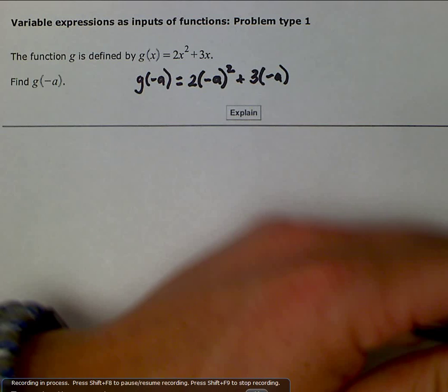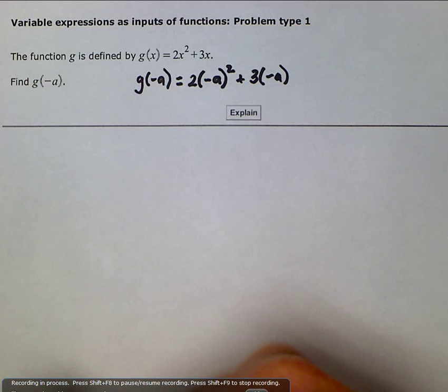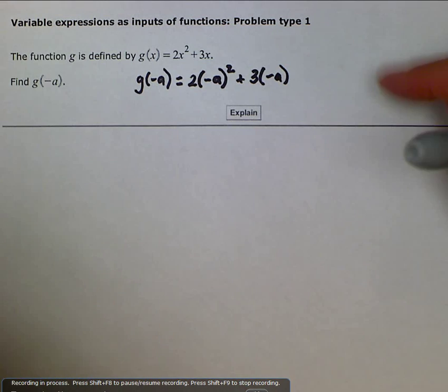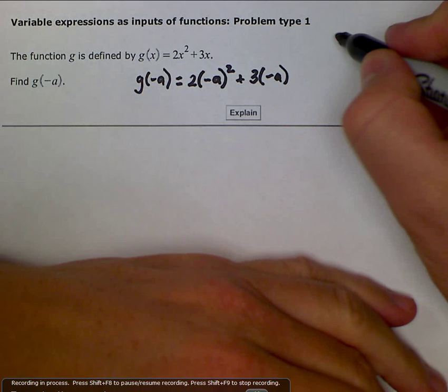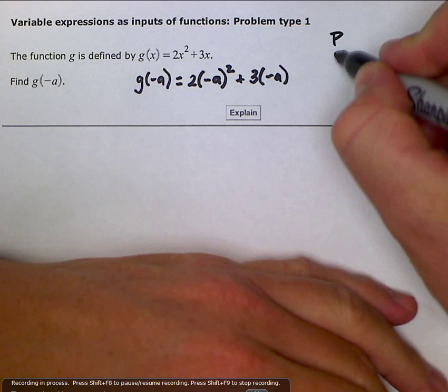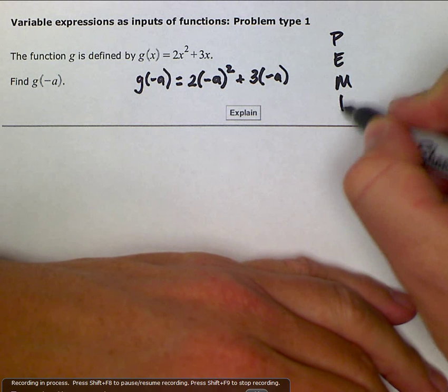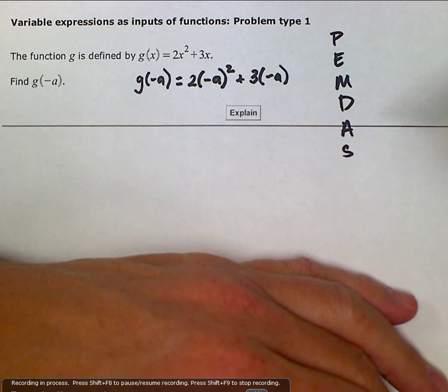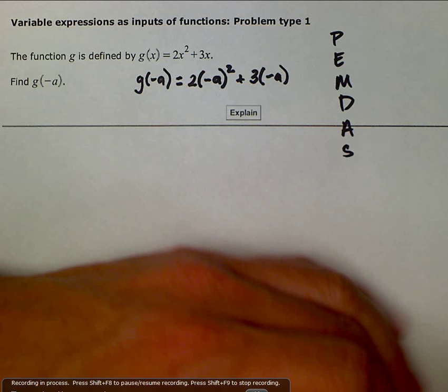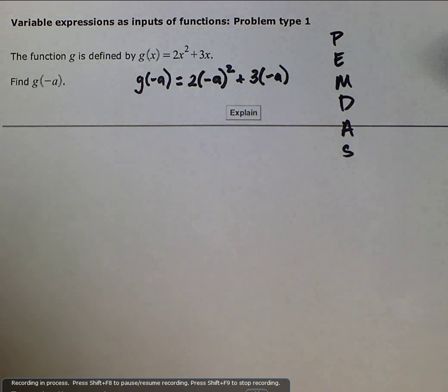And now you just need to remember your order of operations. Remember that inside the parentheses first. If we write our PEMDAS here: parentheses, exponents, multiplication, division, addition, subtraction. So inside the parentheses there's nothing we can do to simplify, no operations within the parentheses. But next comes exponents.